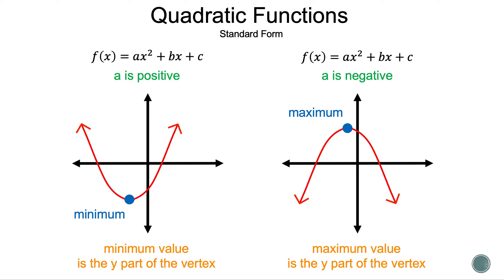What do we think it means when a is negative? That's correct. We will have an upside-down u, since all the output values will be negative, so the graph will go down. So there will be a maximum value, which is the y-part of the vertex.